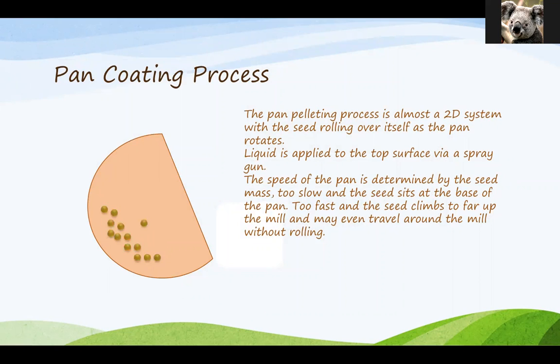If we look at the pan coating process and the way the seed moves within that process, you'll see that it's more or less a rolling motion in just two dimensions. The liquids or the polymers are applied to the top surface using a spray gun and the speed of the pan will be determined by the seed mass and how well that moves within the pan. So a lot to do with gravity and frictions and not too much to do with the actual control of the operator.